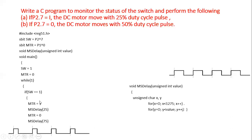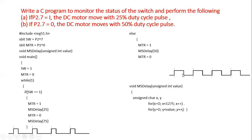Next, when the switch equals zero, we need 50% duty cycle — equal on period and off period. The else branch handles this: switch equals zero means the motor is turned on, we change from zero to one, pass value 50 to the subroutine for the on period, then set it back to zero and call the subroutine again with 50, generating another 50%, giving 100% total time period.